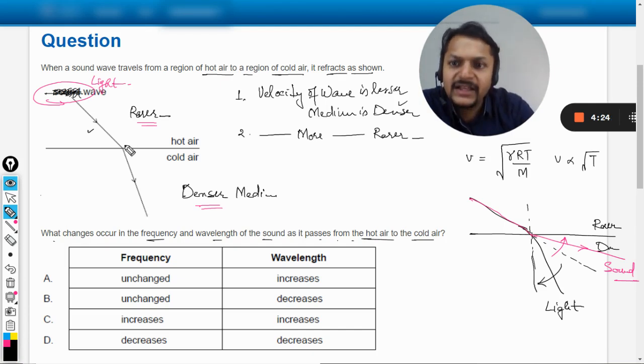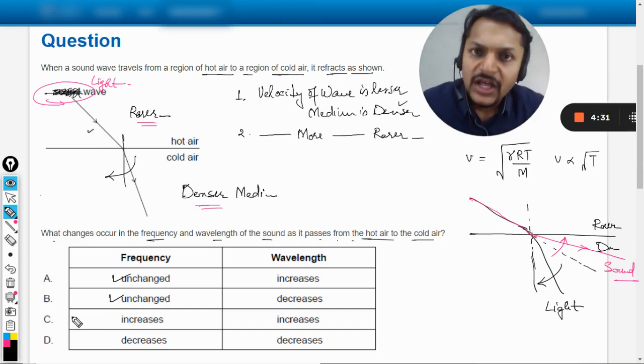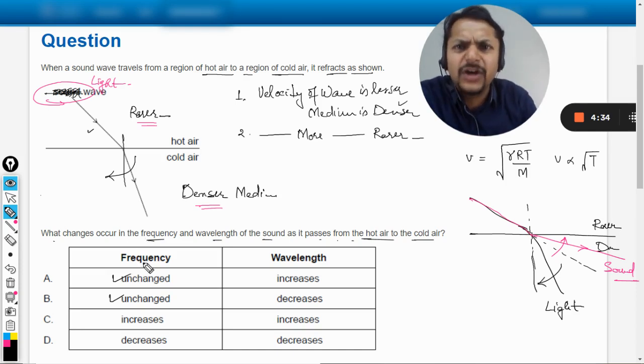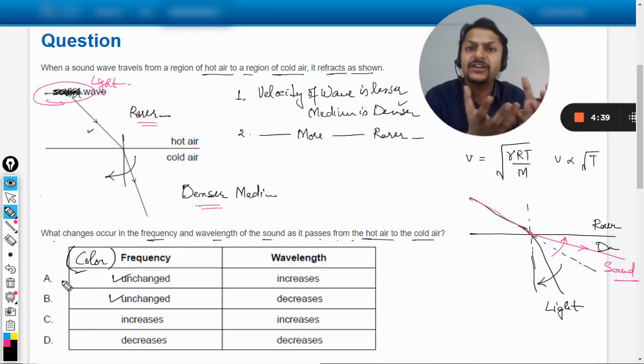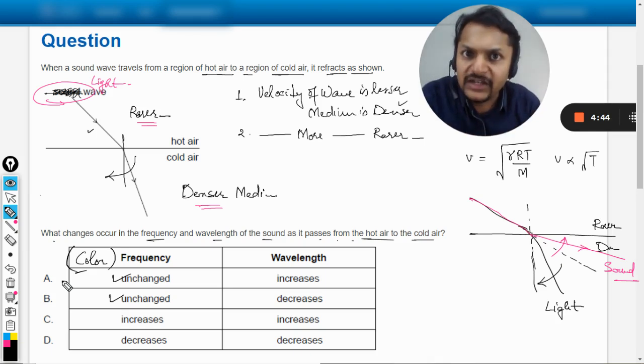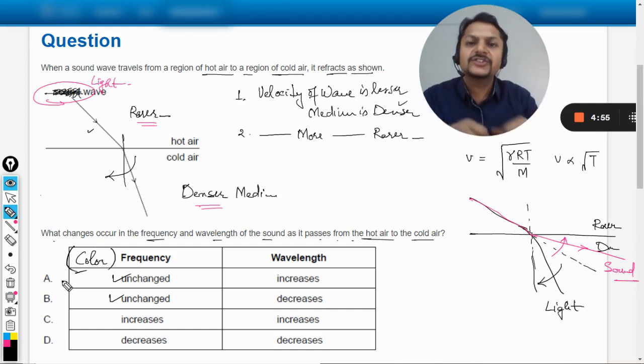The frequency is always unchanged when the medium is changed. Obviously you can say that frequency means the color of the light. Like for example, there is a red colored bulb that is inside the swimming pool, it will look red when you are inside the swimming pool or it will be still looking red if you're out of the swimming pool. So the frequency doesn't change.